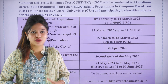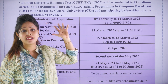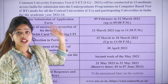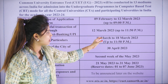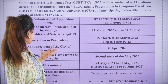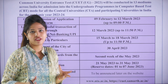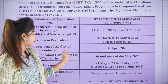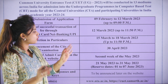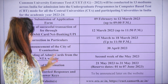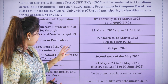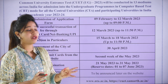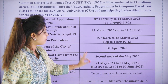Now let's look at the important dates for the CUET UG exam. Online submission of the application form is from 9th February to 12th March. The last date for successful fee transaction is 12th March 2023 up to 11:50 PM. Correction in entered particulars can be done from 15th March to 18th March. Announcement of the exam city is on 30th April 2023, and admit card downloading is in the second week of May.